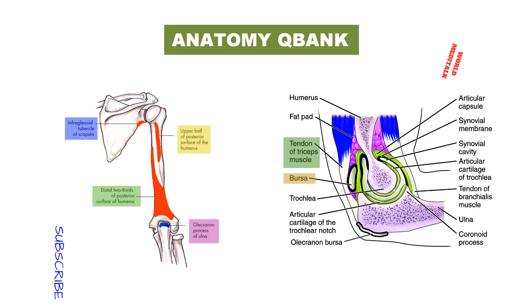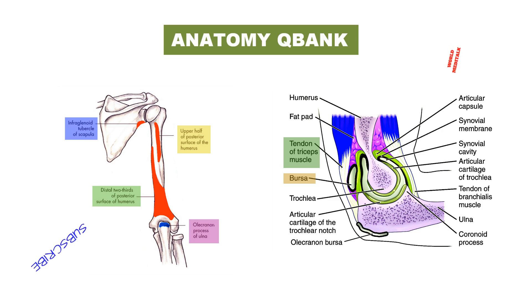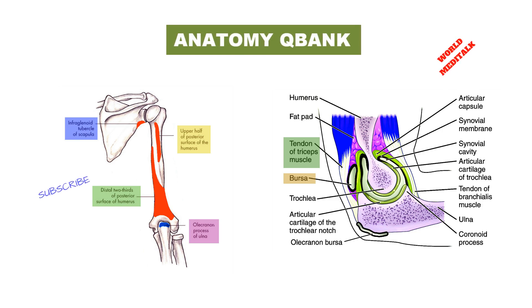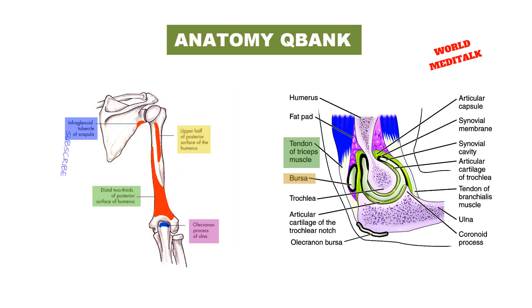There is also a slight transverse groove for the attachment of part of the posterior ligament of the elbow joint anteriorly. The brachialis muscle is inserted into the coronoid process of the ulna, while the pronator teres and other muscles take origin from the coronoid process.